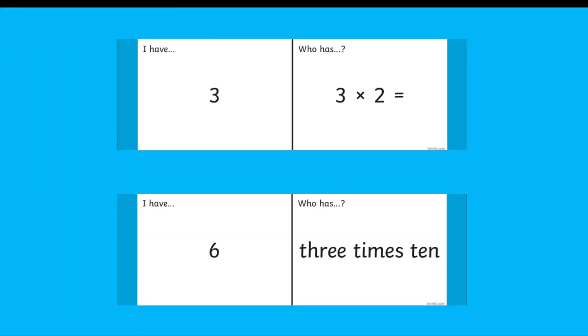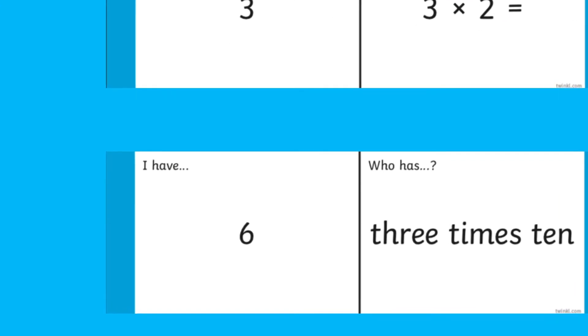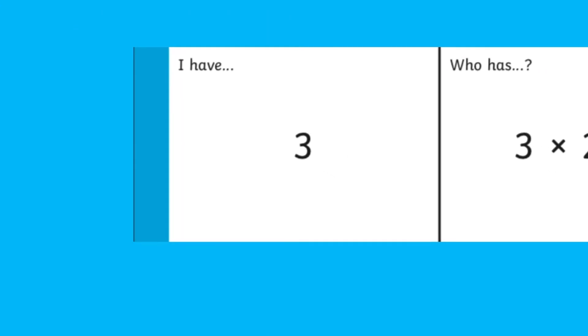One person reads who has, for example, three times two, then the person with the correct answer will read their who has question and so on until the loop ends and is back to the first person's card.